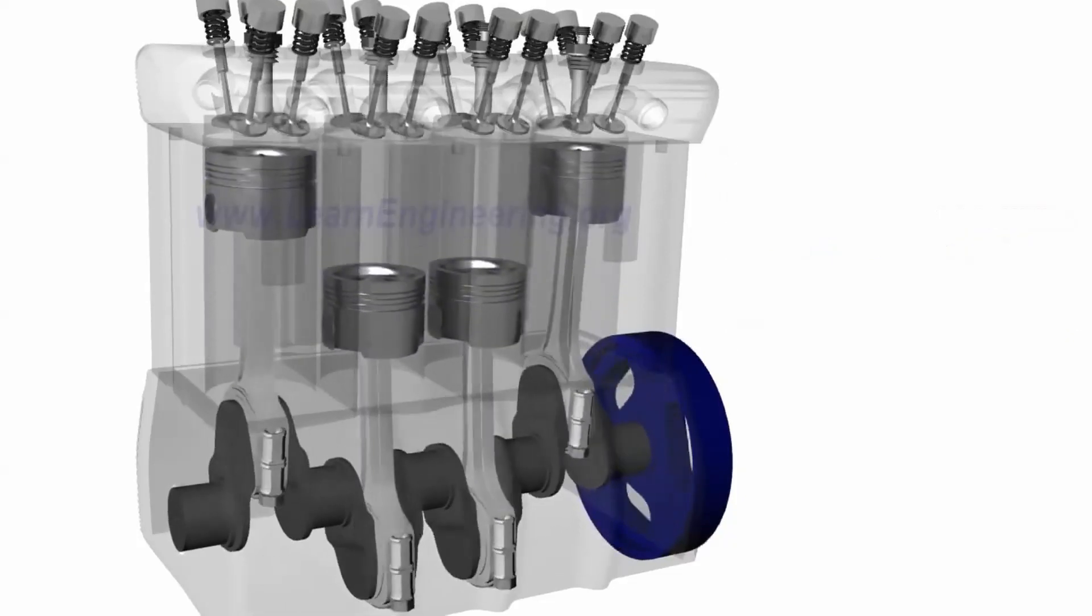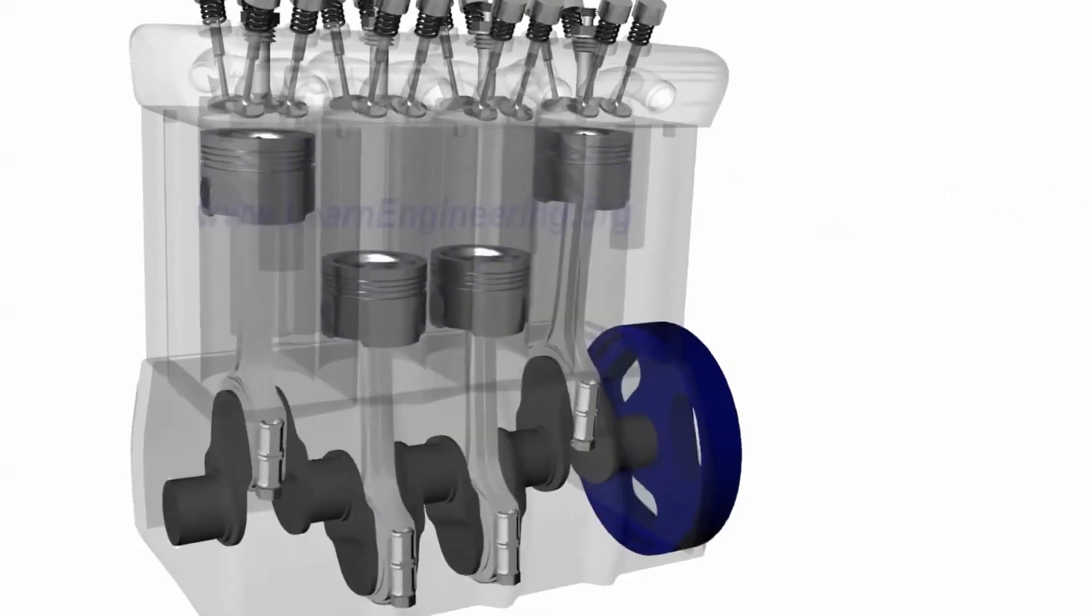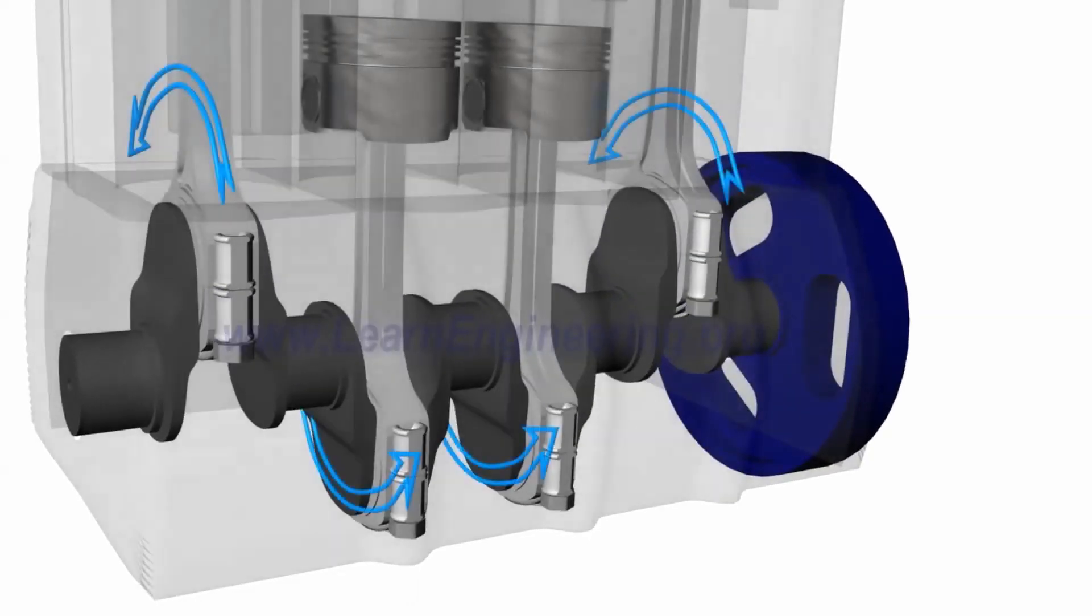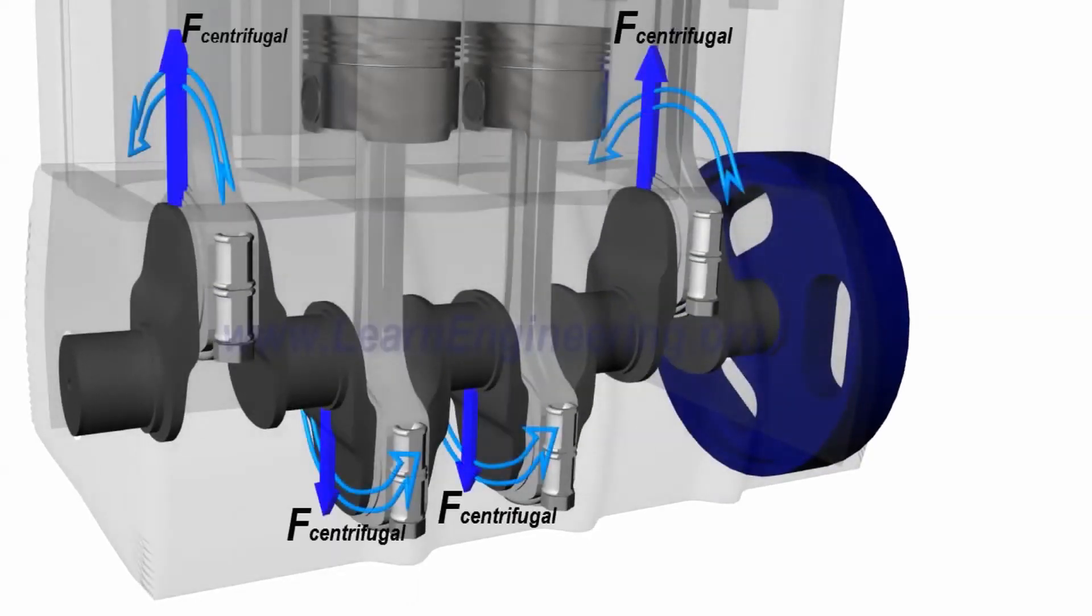A huge unbalanced force arises in the form of dynamic unbalance due to the excessive mass at the connecting rod side. This is negated by providing counterweights on the crank side.